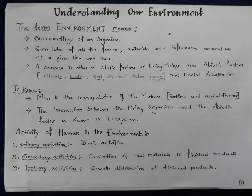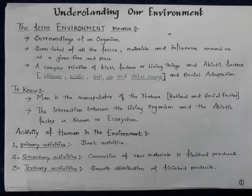Agriculture can deplete the soil, and with the growing demand for food, more and more land is being brought under agriculture — often as a result of clearing forests. This not only depletes the soil but also has an adverse effect on the environment. The decreasing green belt has resulted in global warming, which is known as the greenhouse effect.